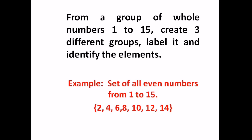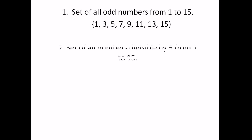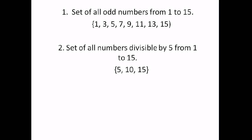So now I will give three more groups. First, set of all odd numbers from 1 to 15: 1, 3, 5, 7, 9, 11, 13, 15. Set of all numbers divisible by 5 from 1 to 15: 5, 10, 15.